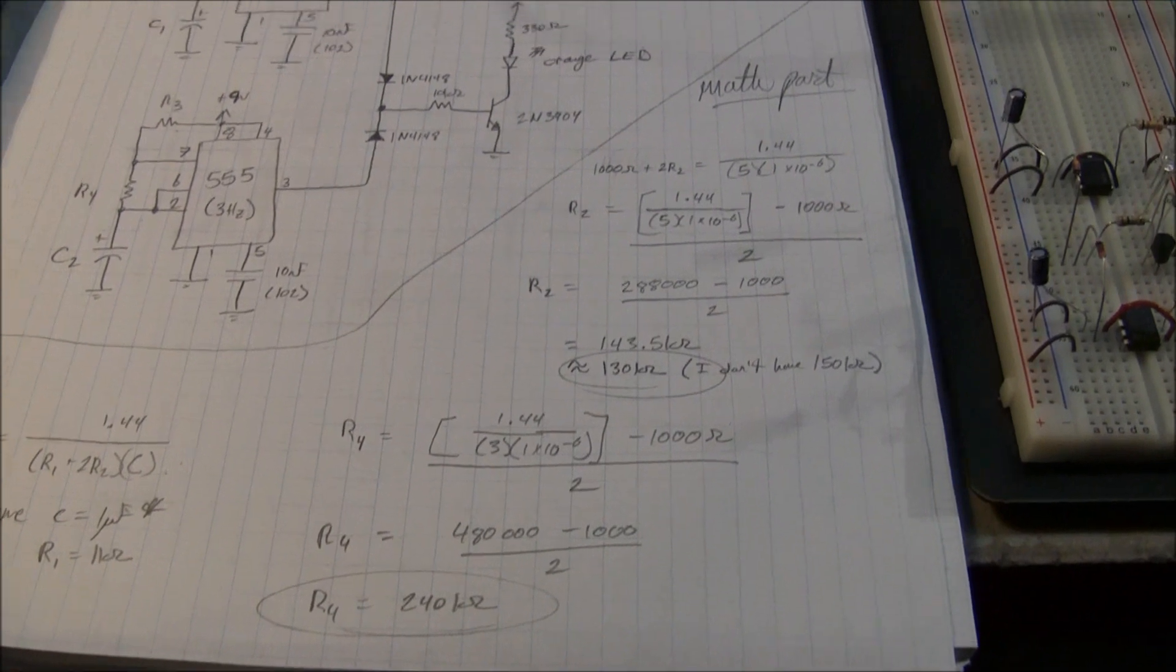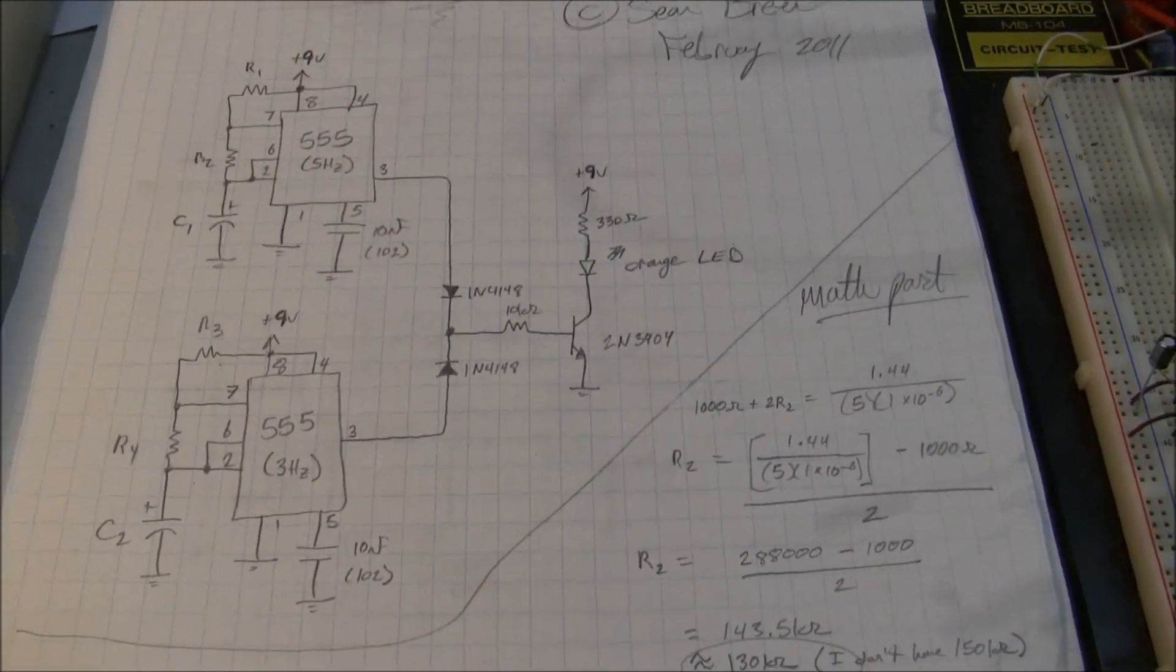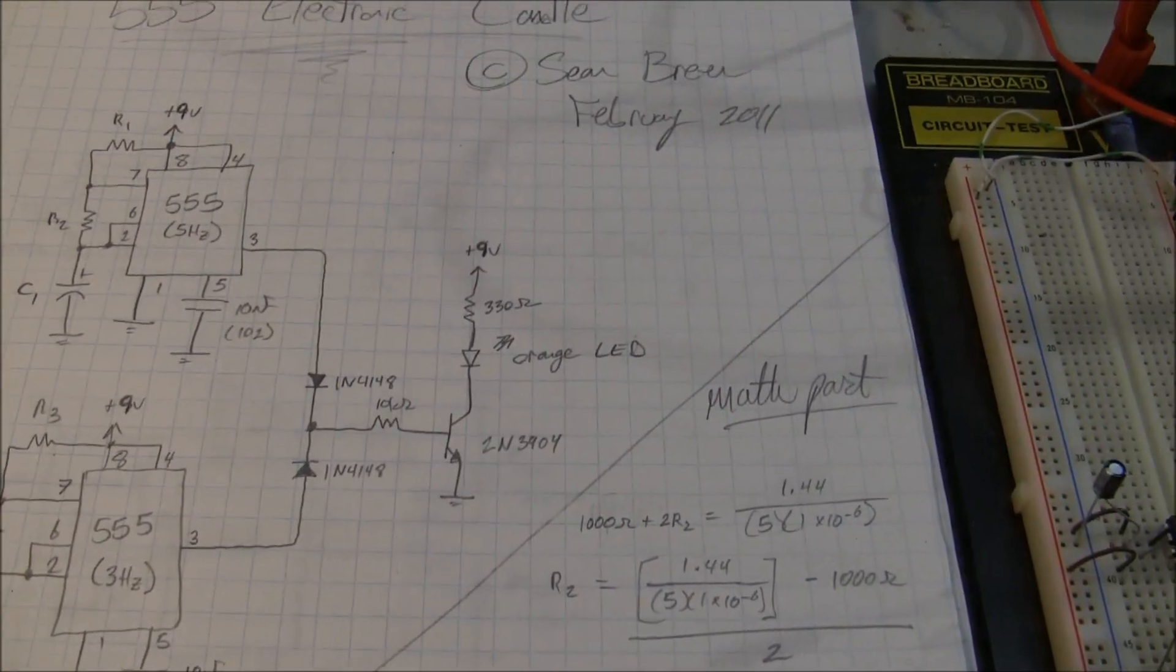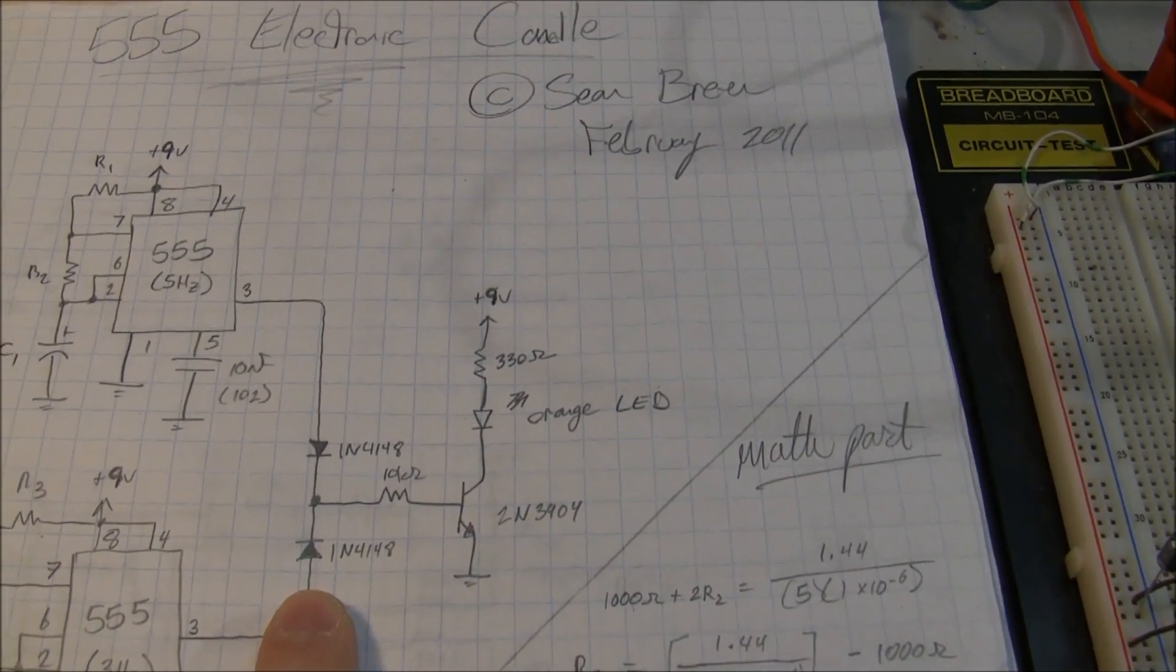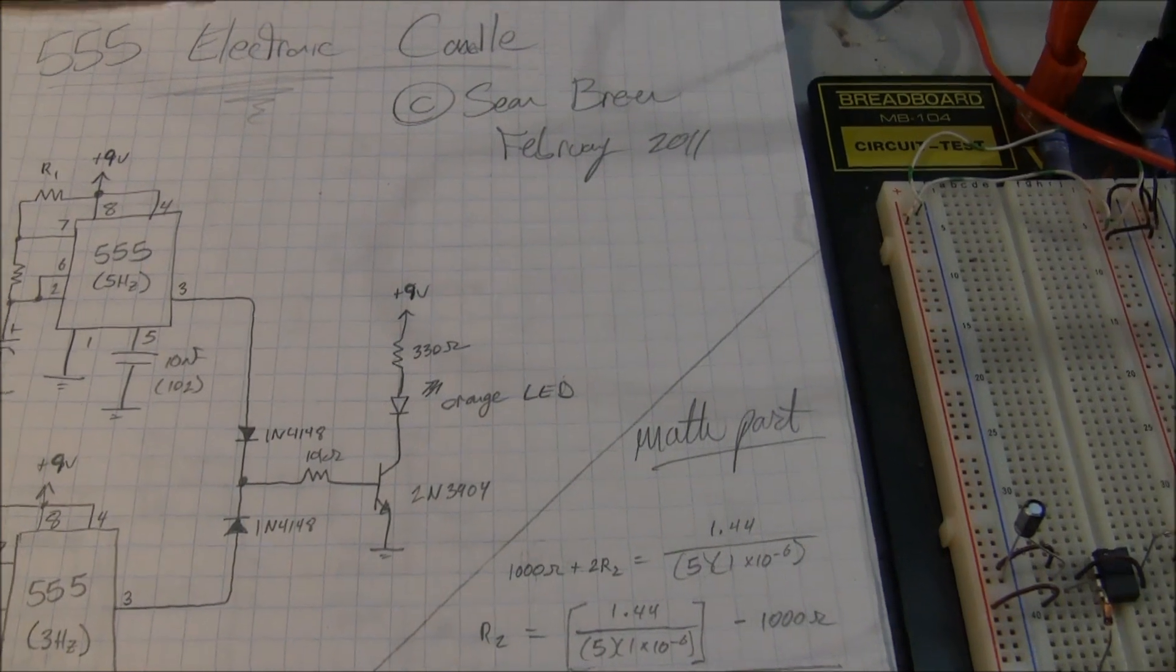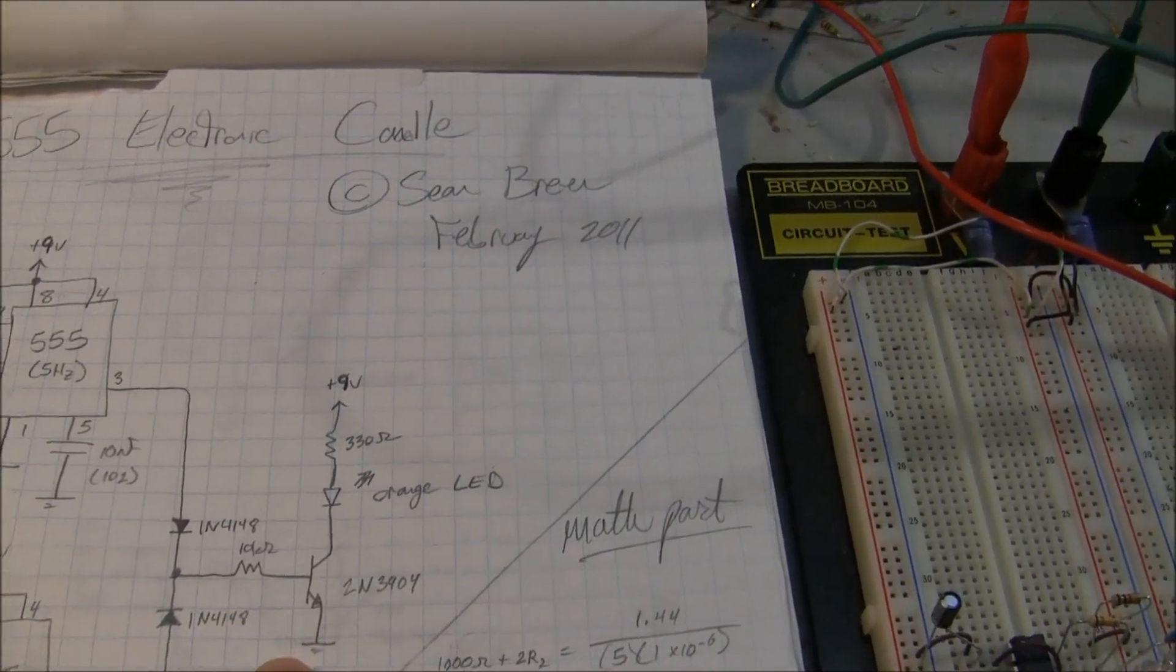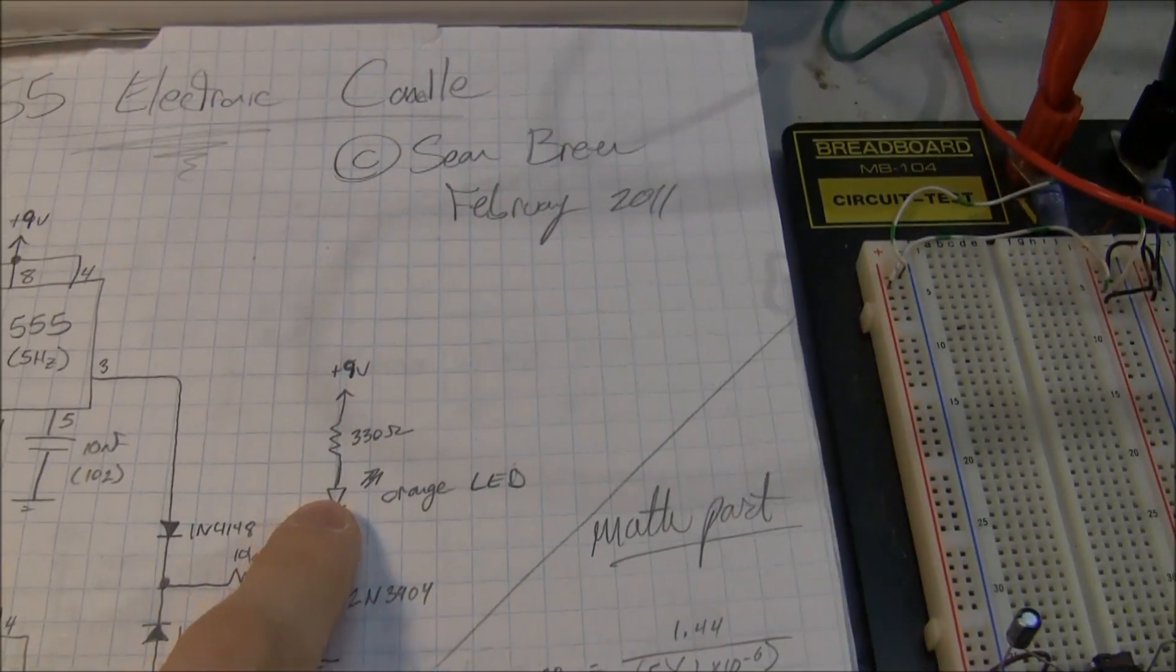And what I've done is very simply created an OR gate here using two 4148 signal diodes which then just saturate the 3904 transistor and turn on an orange LED.